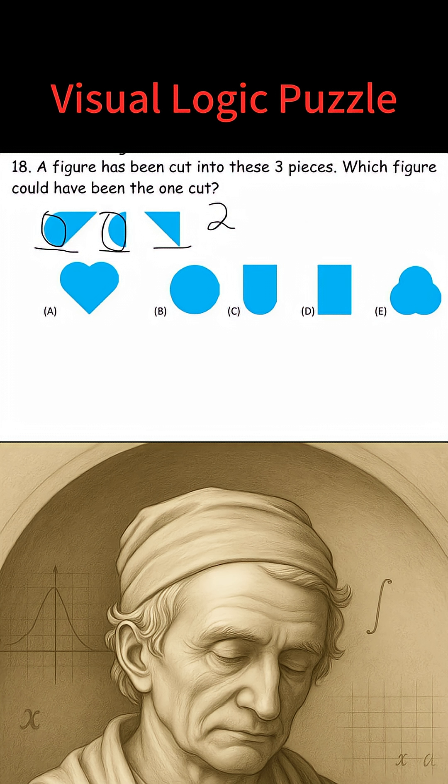So answer choice A has a total of two curves. One here, one here.